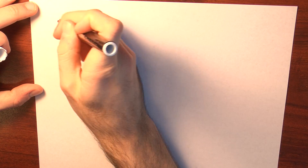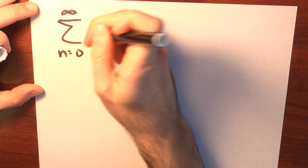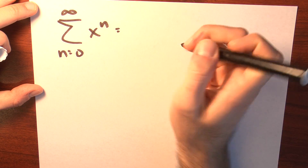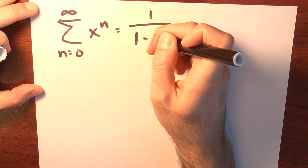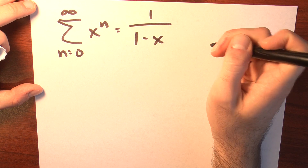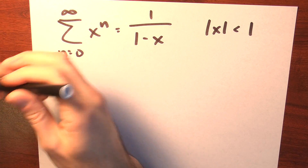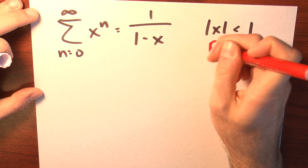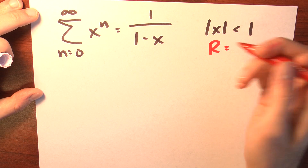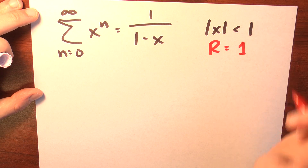Armed with this result, we can do some pretty great stuff. For example, we know that the sum as n goes from 0 to infinity of x to the n equals 1 over 1 minus x, as long as the absolute value of x is less than 1. In other words, in this particular instance, the radius of convergence big R is 1.